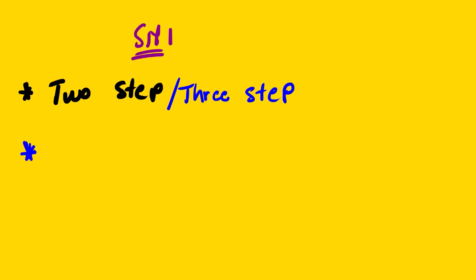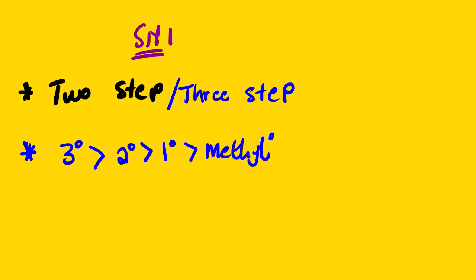Relating this to SN2, we have a reactivity trend based on alkyl halides. Under SN1, the reaction works better with tertiary alkyl halides, followed by secondary, then primary, and then methyl. If you remember, in SN2 the tertiary alkyl halides don't usually work — it is not possible because of steric hindrance.